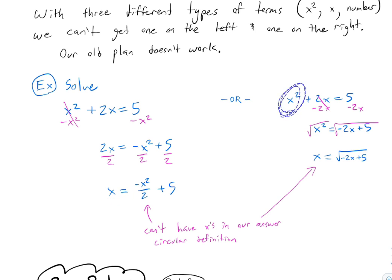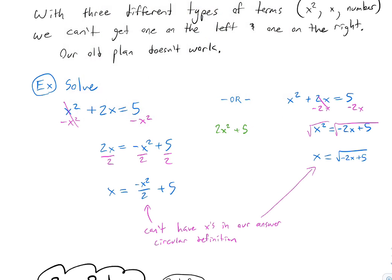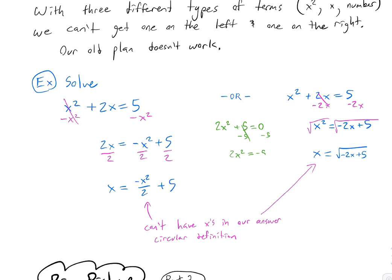If we just solve for the x squared, we move the x's to the other side by subtracting, take the square root, and x is equal to — but again there are still x's there, because there are two different types of things. Our old strategy doesn't work when we have three or more unlike terms. With just two unlike terms — like x squareds and numbers — we can actually use our old plan, but we may get imaginary numbers.